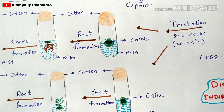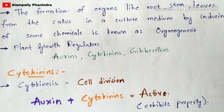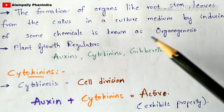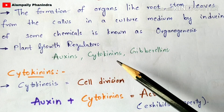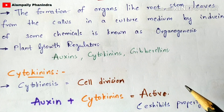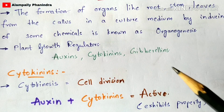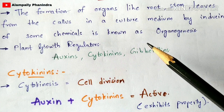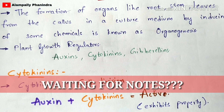Looking at the definition again: the formation of organs like root, stem, and leaves from the callus in a culture medium by inducing some chemicals is known as organogenesis. The chemicals referred to are auxins and cytokinins — plant growth regulators — along with nitrogen, phosphorus, manganese, magnesium, and various micro and macro elements present in the nutrient medium, all of which help the callus develop into proper organs.